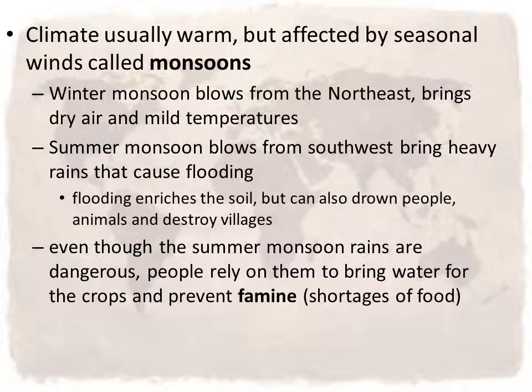Important things to know about this region: in the Indus River Valley, the climate is usually warm, but it's very much affected by seasonal winds called monsoons. There are two different types. In the winter, the monsoon winds blow air from the northeast, which brings dry air and mild temperatures. But in the summer, it's the opposite — the monsoon winds blow air from the southwest, which brings heavy rains that cause flooding.